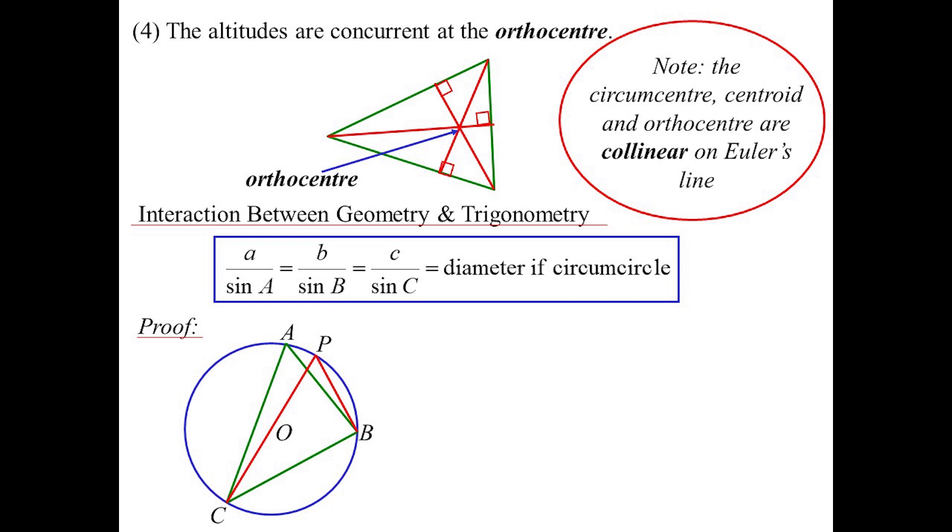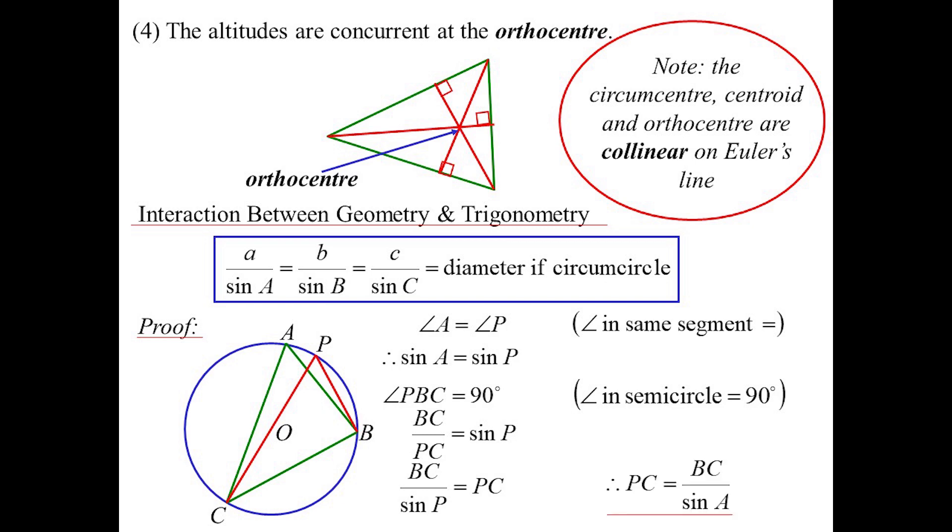Here is the proof. We put in the circumcircle, I'll draw in the diameter of that circle. I know angle A must equal angle P because angles in the same segment, therefore sine A must equal sine P. PBC would be 90 degrees because PC was the diameter - angle in the semicircle. So BC over PC must be sine P. Rearranging, BC over sine P is PC. PC is the diameter of the circumcircle, and BC over sine P equals sine A, so the diameter equals a over sine A.